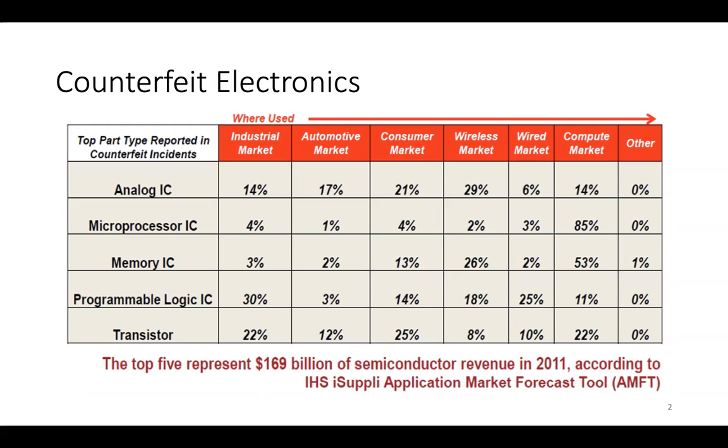Counterfeit ICs can come in a variety of ways. For example, a person can simply desolder integrated circuit chips off a circuit board and sell it as a brand new chip. Therefore, we need to develop a new method to determine the age of these devices, whether on-chip or off-chip measurements, to avoid counterfeiting.